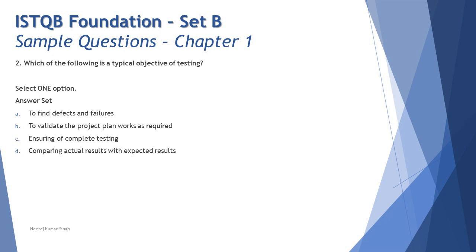Question two is a very straightforward question from 'what is testing': which of the following is a typical objective of testing? The objectives of testing are fairly straightforward, though the options can be slightly confusing. Option A — 'to find defects and failures' — is indeed the core responsibility of a tester: to conduct as many failures as possible so that defects can be identified and rectified.